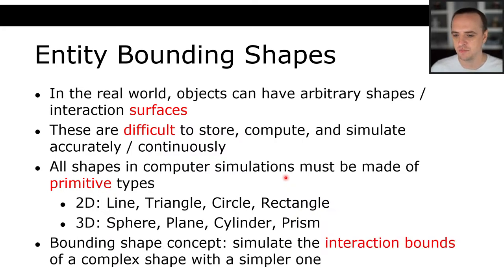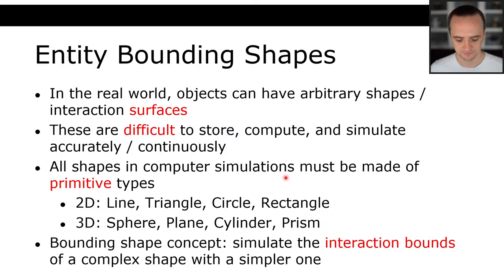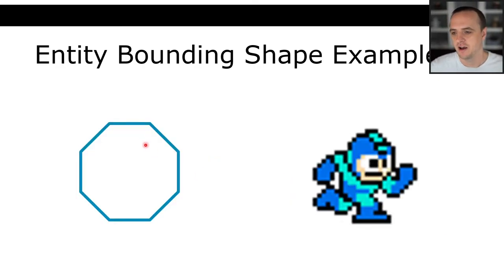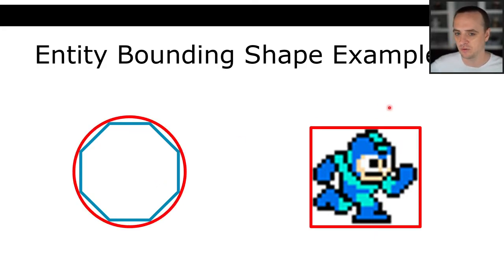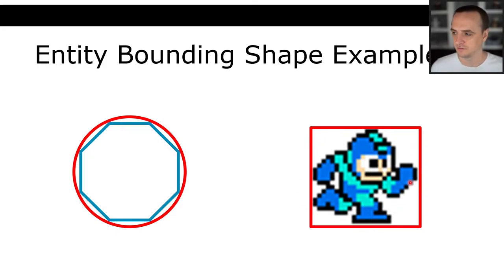For example, in assignment two we had shapes like octagons, triangles, and pentagons. In assignment three we are going to have Mega Man. Both of these shapes — they're not that complex, but we are going to simulate their bounds with a simpler shape. In assignment two we simulated the bounds of the octagon with a circle, and we are going to simulate the bounds of Mega Man with the rectangle that minimally contains it.